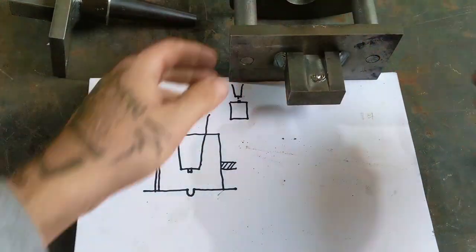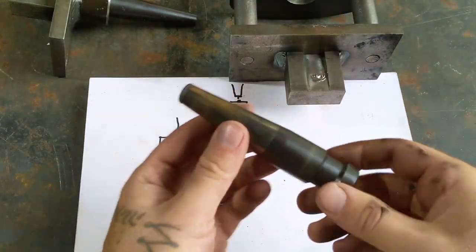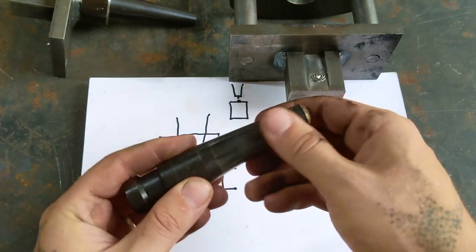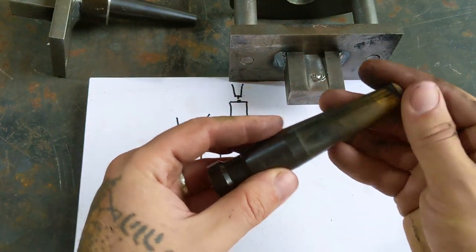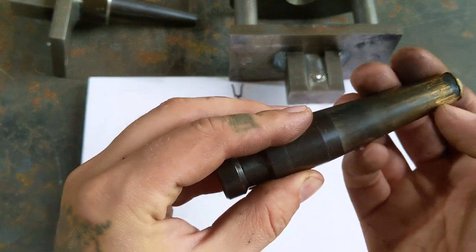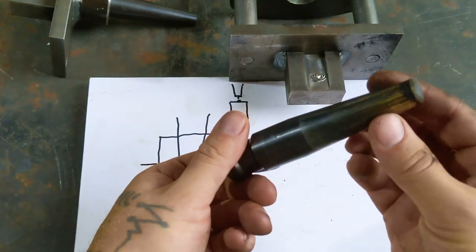If your punch has been used a lot, like this one has, and you see this bronzy coating, that's from punching aluminum bronze. It deposited itself on the surface, and it's actually pretty rough. I want to grind that off before I use this for another material.